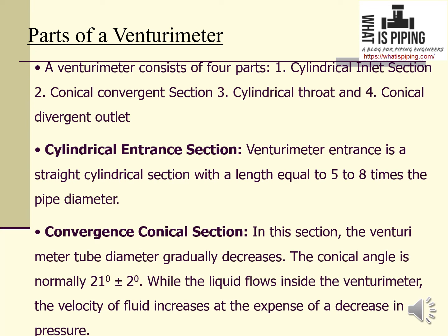A venturimeter consists of four parts: the cylindrical inlet section, the conical convergent section, the cylindrical throat, and the conical divergent outlet. The cylindrical entrance section is a straight cylindrical section with a length equal to 5 to 8 times the pipe diameter.